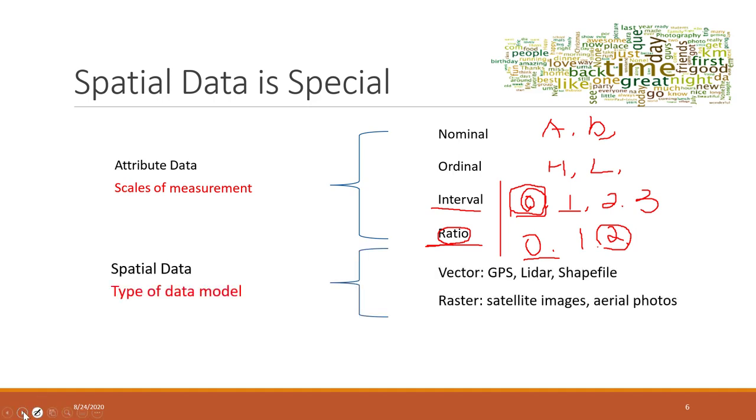When we talk about spatial data, there are mainly two types. The first one is called vector data, for example GPS data, LIDAR, and shapefiles - those are the most common vector data. We also have raster data, like satellite images and aerial photos. Those are the most common raster data. We'll talk about those two types of data in the following weeks.